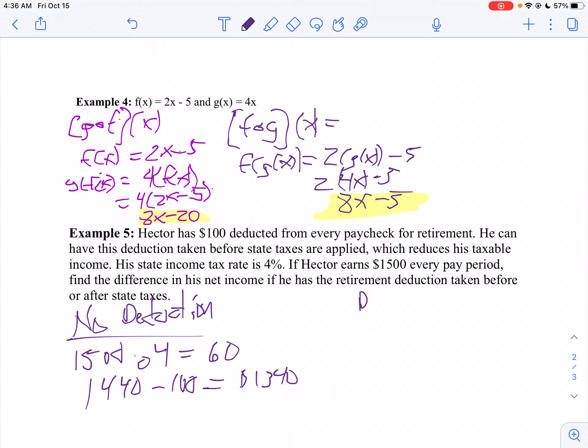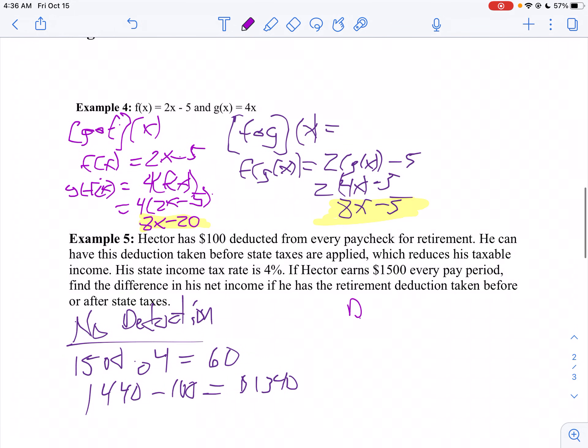Now let's do the deduction first. So he's going to start with $1,500, we're going to take off $100 first. So his take-home pay, or what he's being taxed on, is only $1,400. Now to figure out how much we're paying in taxes, we take $1,400 times 0.04. So $1,400 times 0.04, he's going to pay $56 in taxes. And so to figure out his take-home pay, we take $1,400 minus $56, and that will give us $1,344.